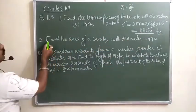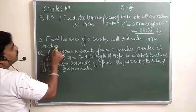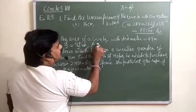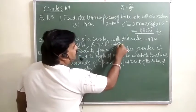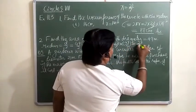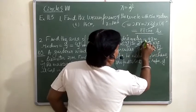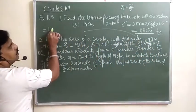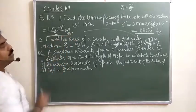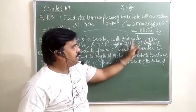Question 2: Find the area of a circle with diameter 49. Radius = 49/2. Area = πr² = (22/7) × (49/2)². Solving: (22/7) × (49/2) × (49/2). Cancel 7 with 49 giving 7, and simplify to get 11 × 7 × 49/2.